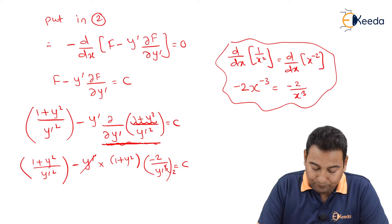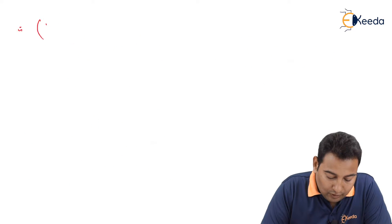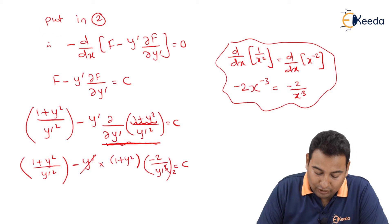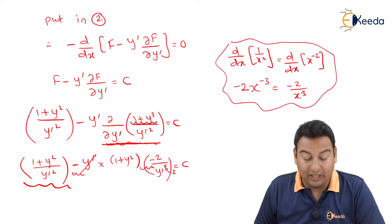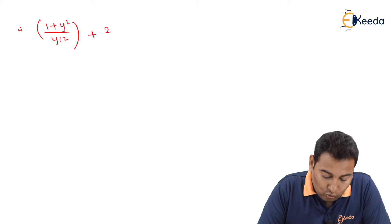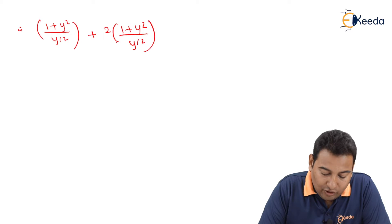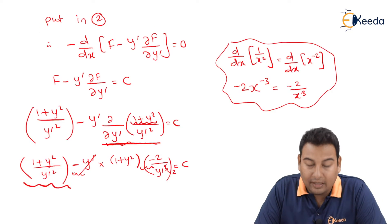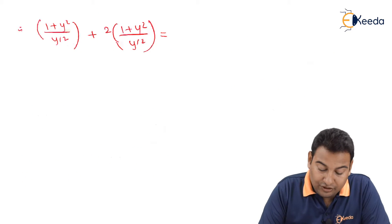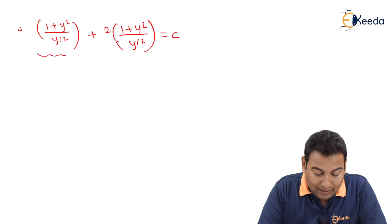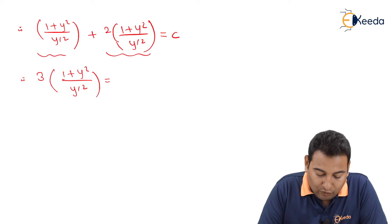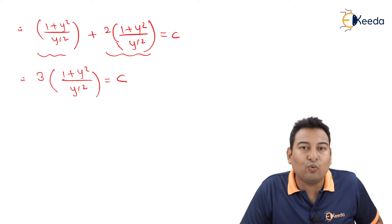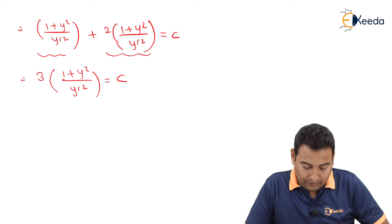So we get (1 + y²)/y'² plus 2(1 + y²)/y'² = c, since minus times minus gives plus. Adding 1 + 2 = 3, this simplifies to 3(1 + y²)/y'² = c. Our aim is to get y as a function of x.